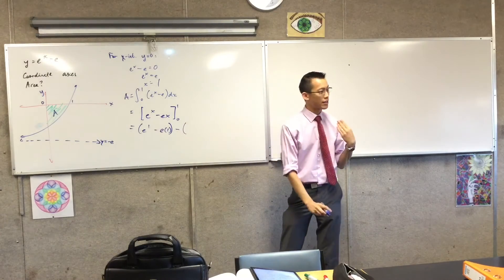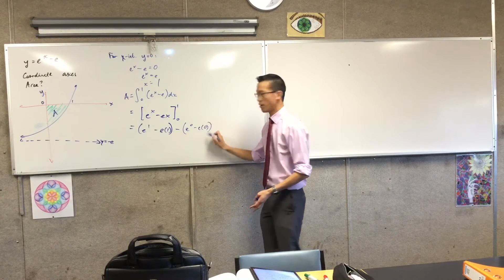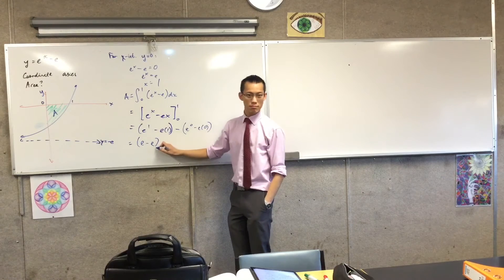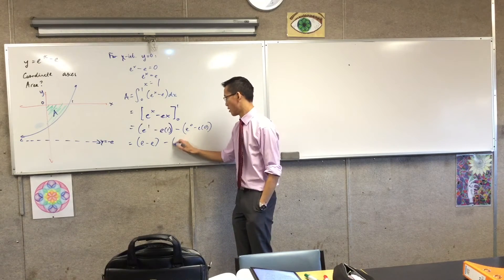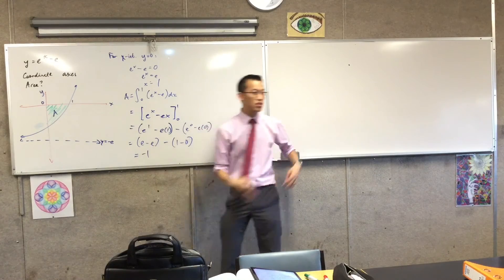Take away, and I better evaluate at the lower bound, which of course also has its own value. So what have I got here? I've got e take away e minus 1 take away 0. And that whole thing is negative 1, just as we were expecting, because it's below the axis.